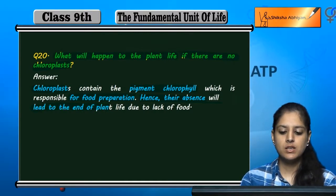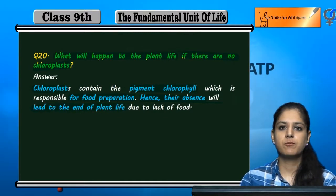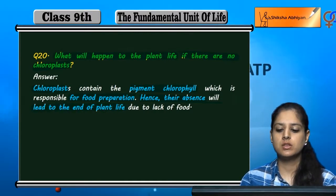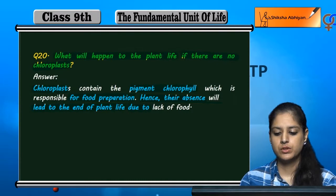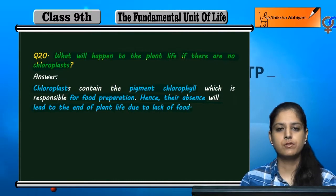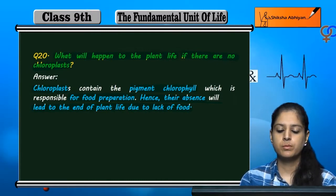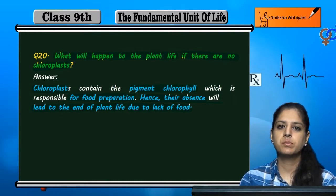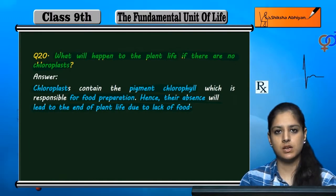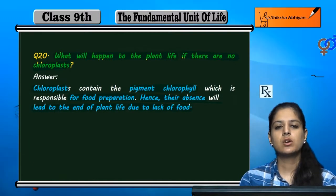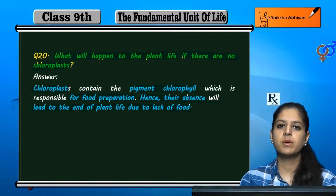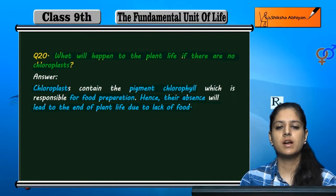Ultimately, the plant life will end due to lack of food. Because of chloroplasts, plants are able to prepare food through the process of photosynthesis. So, if there are no chloroplasts, then they will not prepare food, and ultimately the plant life will end.